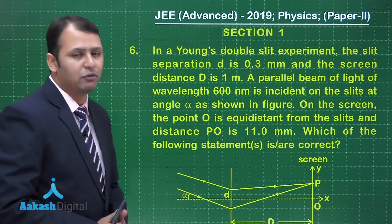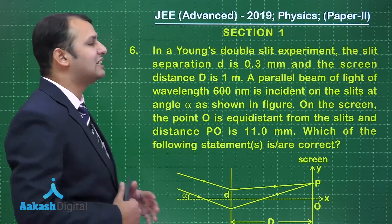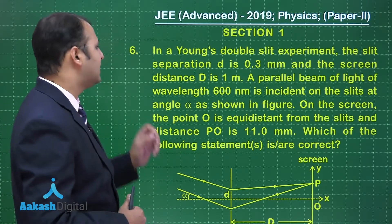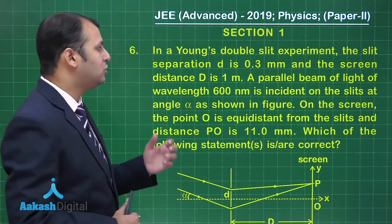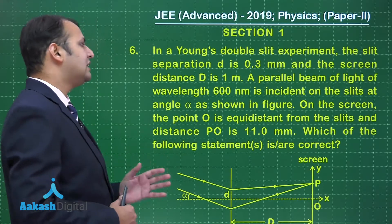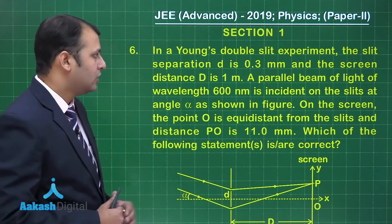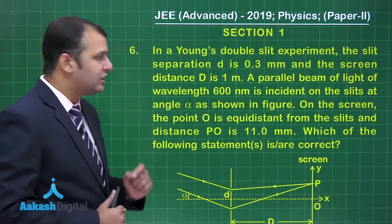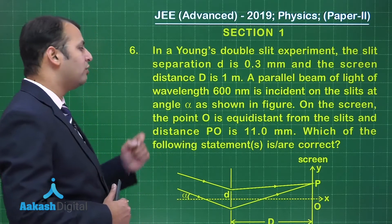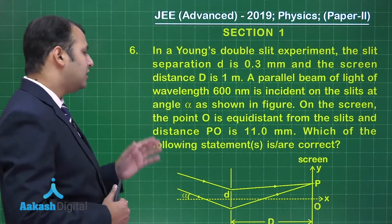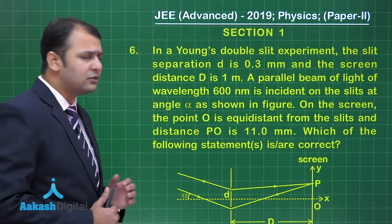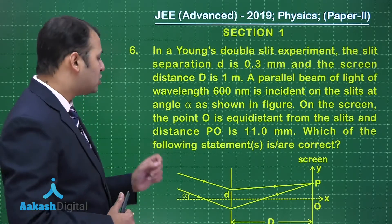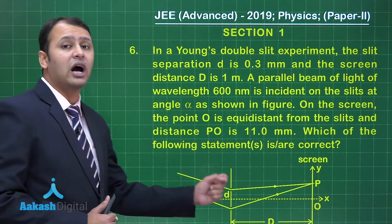The question belongs to chapter wave optics from the topic Young's double slit experiment. In a Young's double slit experiment, the slit separation d is 0.3 mm and the screen distance capital D is 1 meter. A parallel beam of light of wavelength 600 nanometers is incident on the slits at an angle of alpha as shown in the figure. On the screen, the point O is equidistant from the slits and the distance PO is 11 mm. Which of the following statements is or are correct?